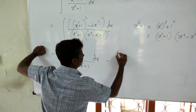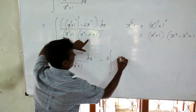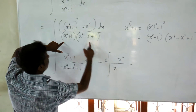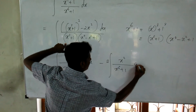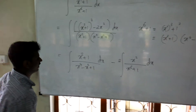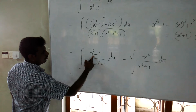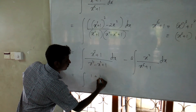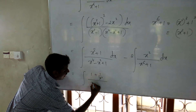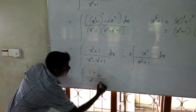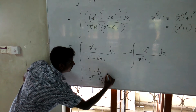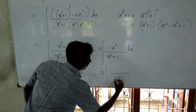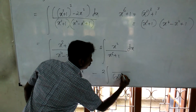Minus, take 2 out: x squared divided by x to the power 6 plus 1 dx. Now I am going to divide top and bottom by x squared, giving (1 + 1/x²) over (x² minus 1 + 1/x²) dx.